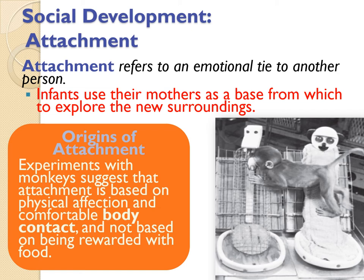Securely attached children are actually more willing to explore — a toddler who runs off at preschool and forgets their parent is showing healthy attachment, not indifference. A child clinging to a parent's leg may signal over-dependence, fear at home, or other disruptions in the attachment relationship.